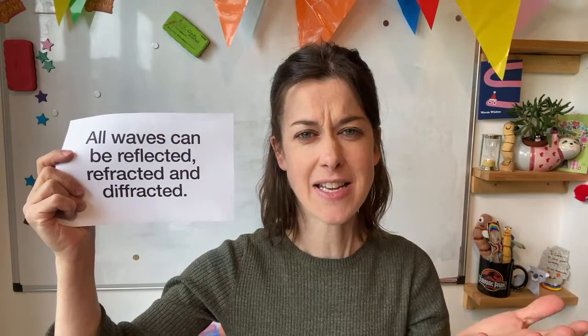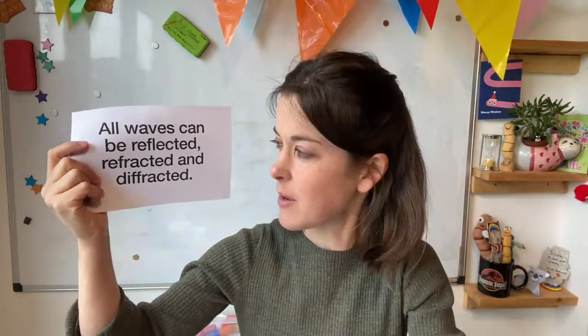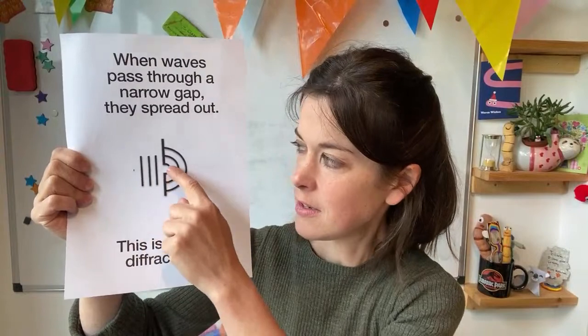While you finish sellotaping the two ends of a pencil, I'll explain what diffraction is using these little signs I made. All waves can be reflected, refracted, and diffracted. Reflection is waves bouncing off a surface. Refraction is light travelling through a boundary into a different material, slowing down or speeding up, and maybe changing direction. But diffraction — what is it? It's the whole point of today's lesson. When light, or any waves, pass through a narrow gap, they spread out. This is diffraction.